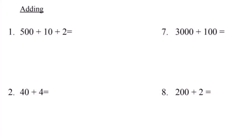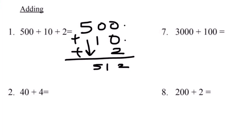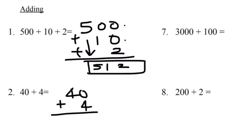Number one, they give us the equation 500 plus 10 plus 2. Let's align the numbers vertically so it's easy for us to solve. 2 plus 0 plus 0 equals 2. 0 plus 1 equals 1. We bring down the 5. So 500 plus 10 plus 2 equals 512. Number two, 40 plus 4. 0 plus 4 equals 4, we bring down the 4. 40 plus 4 equals 44.